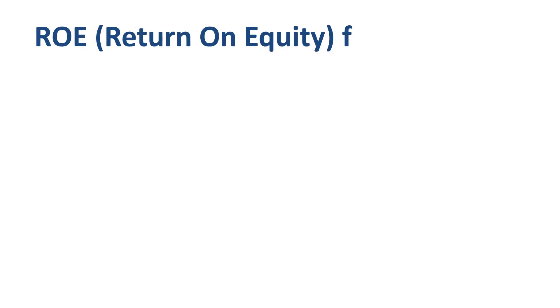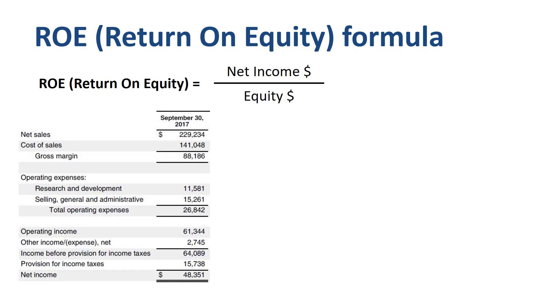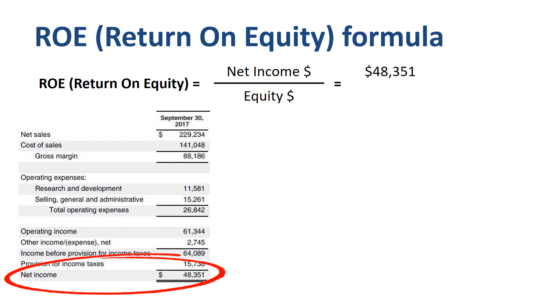What is the high level formula for return on equity? Net income divided by equity. To find net income, you need to check the bottom line of the income statement — $48 billion for Apple in fiscal 2017.